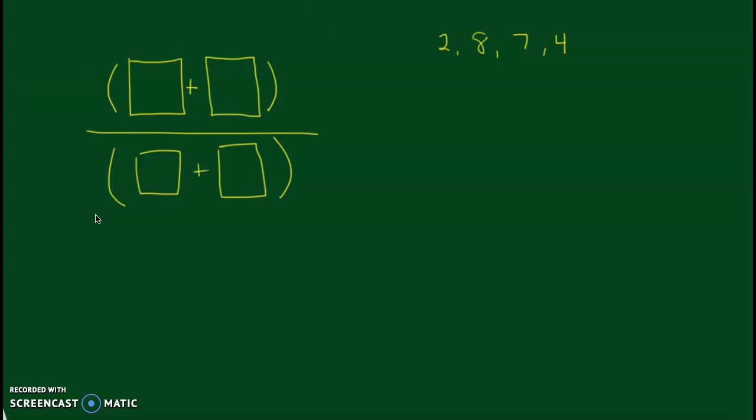So as you can see, this is what the worksheet looks like. And they give you four random numbers. Well, it says they gave Eddie four random numbers. For ours, we're going to use the numbers 2, 8, 7, and 4.